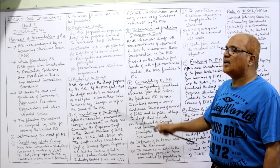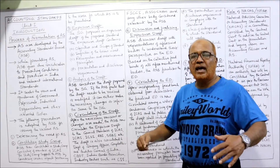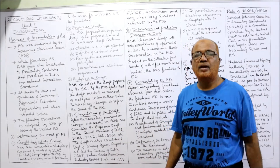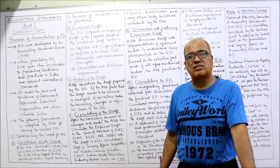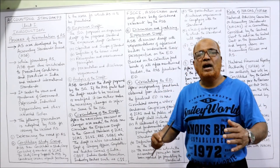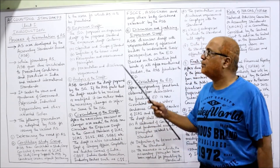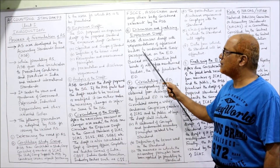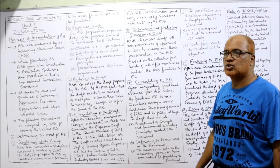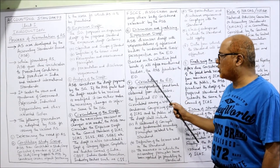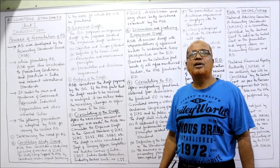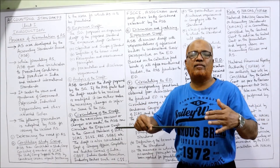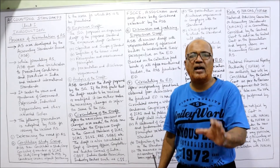The sixth step is discussion and finalizing the exposure draft. ASB will get feedback from all the parties to whom the exposure draft was given. ASB discusses the draft with representatives of the aforementioned bodies to understand their perspective. Based on the collective feedback of all these bodies, ASB finalizes the exposure draft. They analyze all feedback from different angles and produce the final exposure draft.